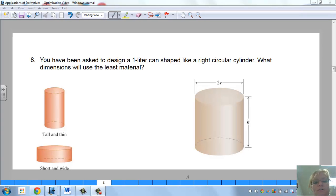Okay, we're continuing on with optimization and this is problem number eight. You've been asked to design a one liter can shaped like a right circular cylinder. What dimensions would use the least material?